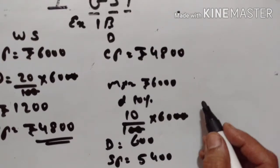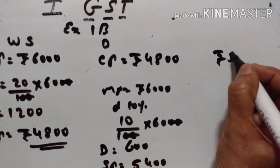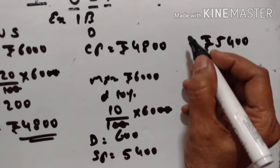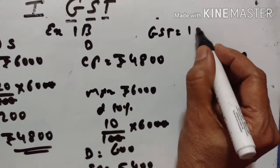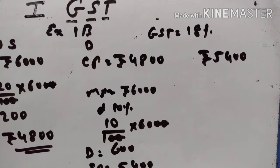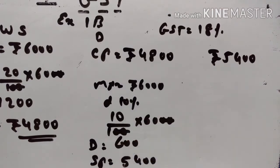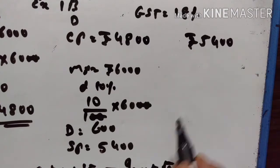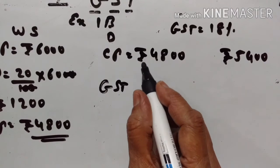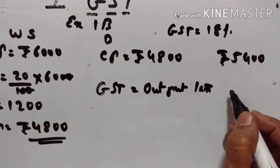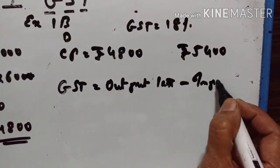So this dealer sells it to a customer at Rs.5400. The rate of GST is 18%. At each stage, find the amount of tax under GST paid by the dealer to the government. Input tax is 18% of Rs.4800 and output tax is 18% of Rs.5400.